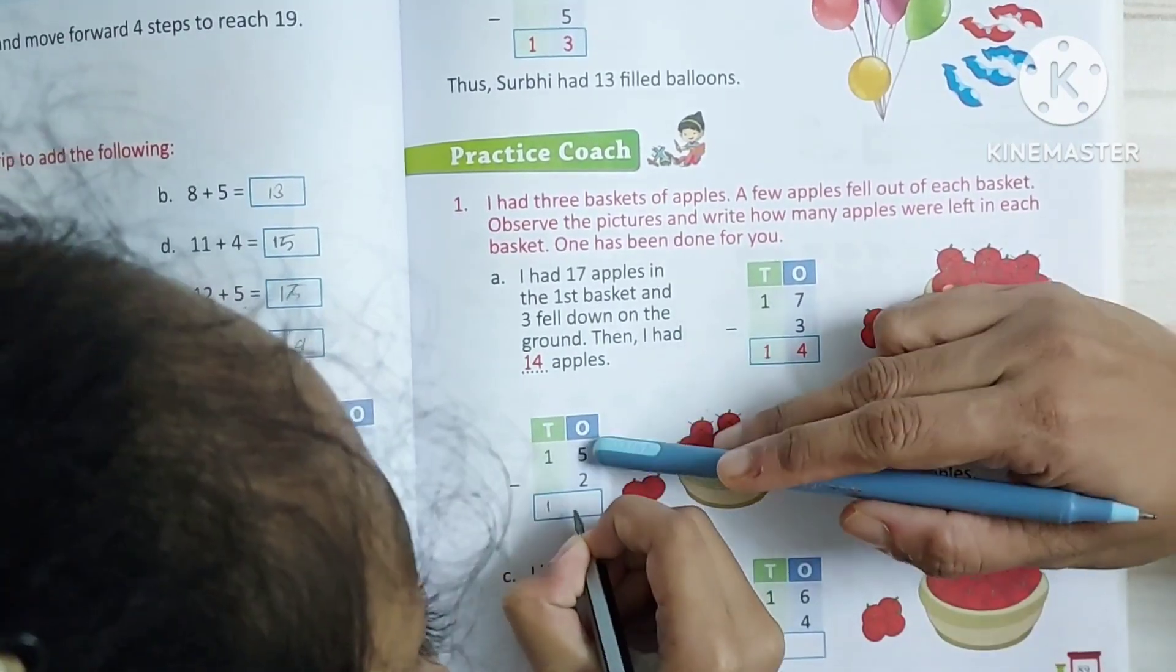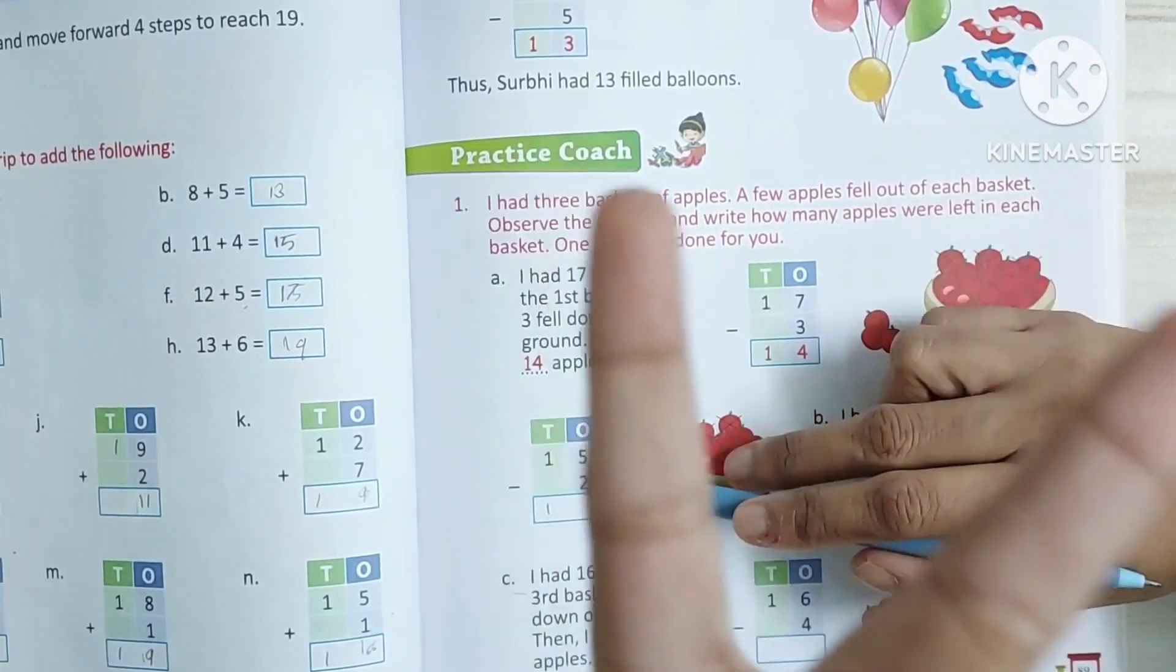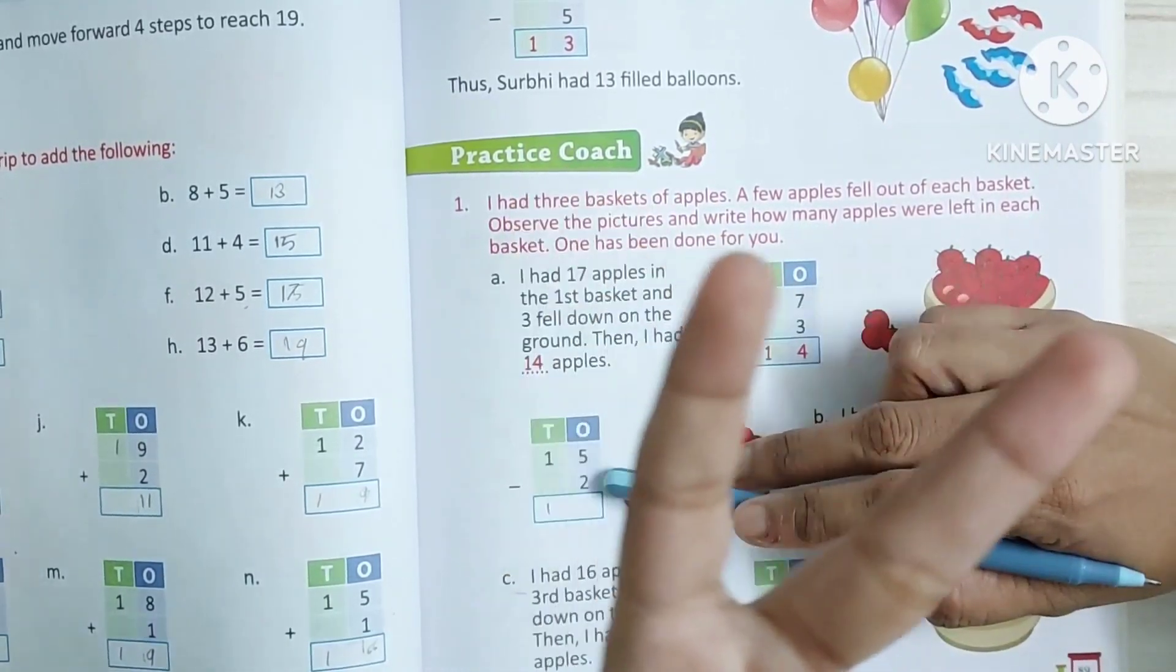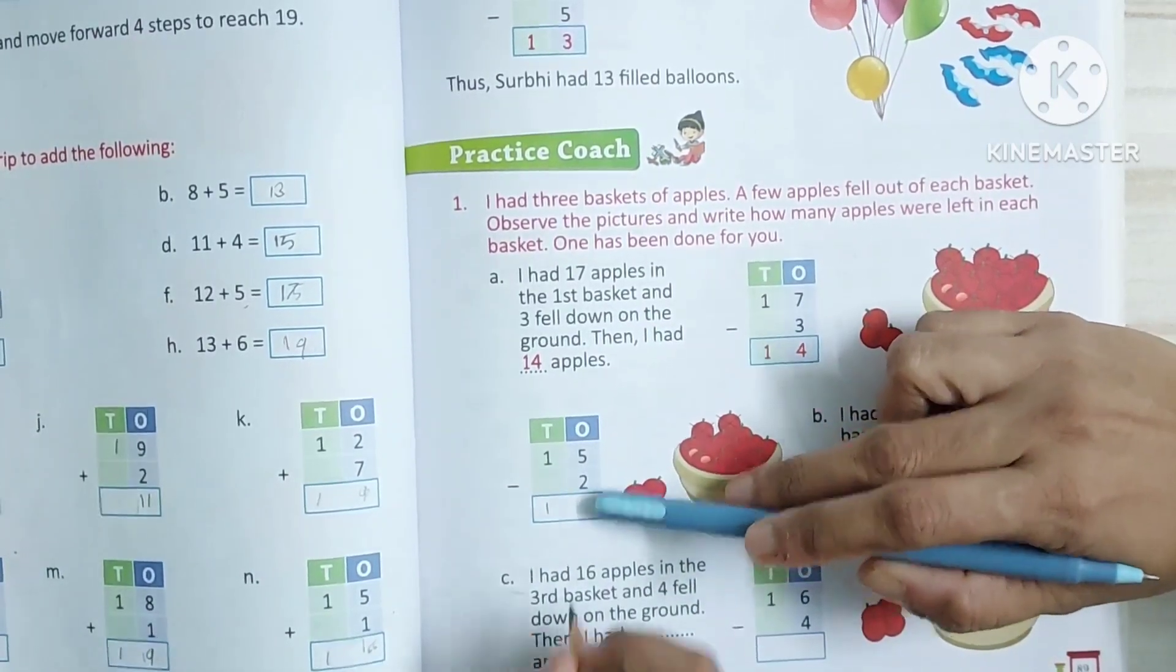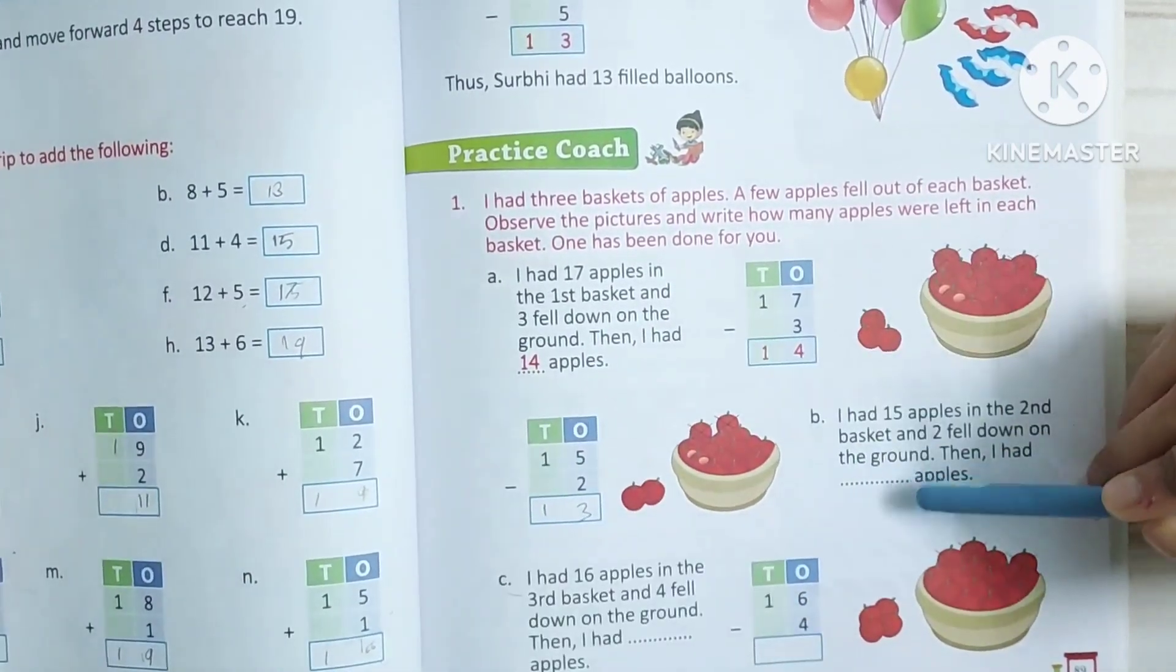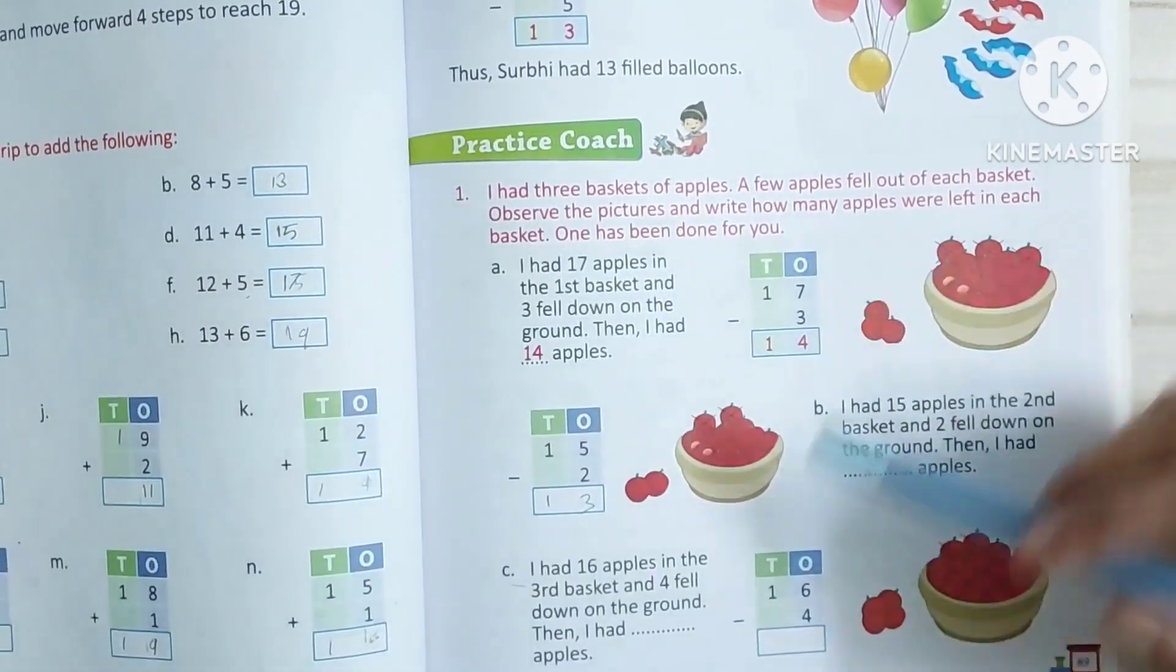13. 1, 3. See, 5 minus 2 is 3. 5 in the mind, two in the finger. Before 5, 4, 3. Yes, write it down. 13. Write it here, 13 apples. Okay.